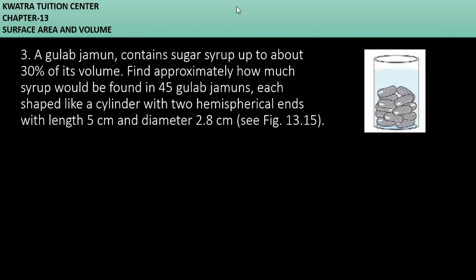Let's start with question number 3. It says a gulab jamun contains sugar syrup up to 30% of its volume. Find approximately how much syrup would be found in 45 gulab jamuns, each shaped like a cylinder with two hemispherical ends with length 5 cm and diameter 2.8 cm.